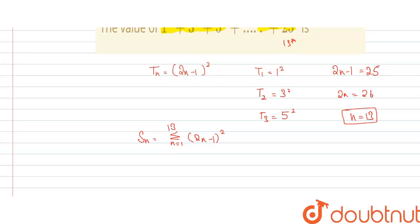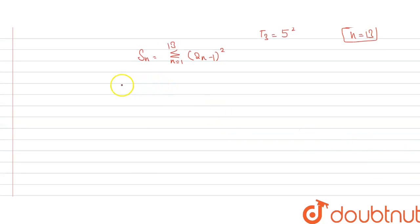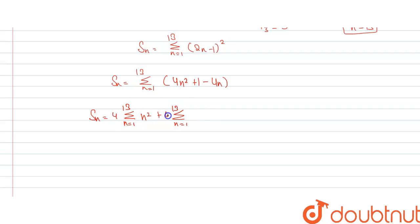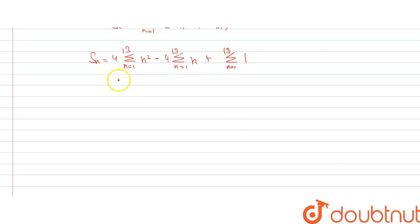Expanding the bracket, (2n − 1)² = 4n² − 4n + 1. So Sn equals the summation from n = 1 to 13 of (4n² − 4n + 1), which we split as: 4 times the summation of n², minus 4 times the summation of n, plus the summation of 1.